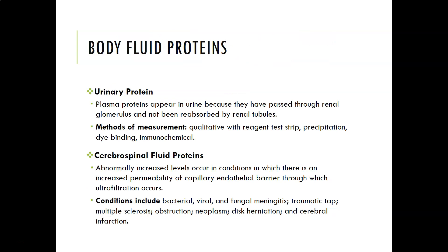Body fluid proteins can also be measured. Urinary proteins are relevant in conditions like nephrotic syndrome. Plasma proteins appearing in urine have usually passed through the renal glomerulus and were not reabsorbed by the renal tubules — proteins are too large for easy reabsorption. Methods for urinary protein measurement include qualitative reagent test strips, precipitation methods such as the sulfosalicylic acid method, dye binding, and immunochemical methods.